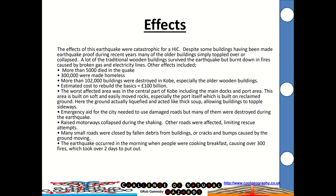This was a big event for a high-income country — a really big event, not as big as Haiti, which we'll go into in a moment. It was a catastrophic event, despite the fact that many buildings were earthquake-proof from recent years, but a lot of the older buildings simply toppled over or collapsed. Many traditional wooden buildings survived the earthquake but burnt down in fires caused by broken gas and electricity lines. More than 5,000 people died, 300,000 were made homeless, 102,000 buildings were destroyed in Kobe alone, and the estimated cost to rebuild was £100 billion.